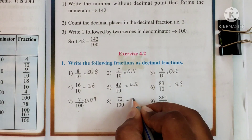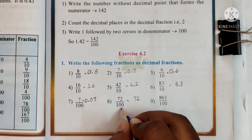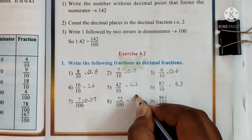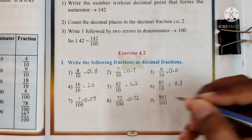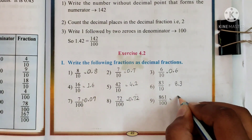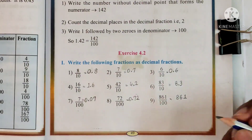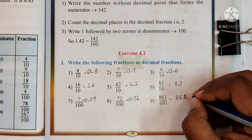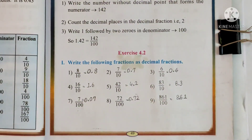Same way, number 8: 72 hundredths — write 7 and 2 as they are. 2 zeros in the denominator, decimal point after 2 numbers from the right: 1, 2 and decimal point. Towards the left of the decimal point, write a 0. Number 9: write the number 8, 6 and 1. 2 zeros in the denominator, so decimal point after 2 numbers from the right: 1, 2, decimal point. So 861 hundredths is 8.61.